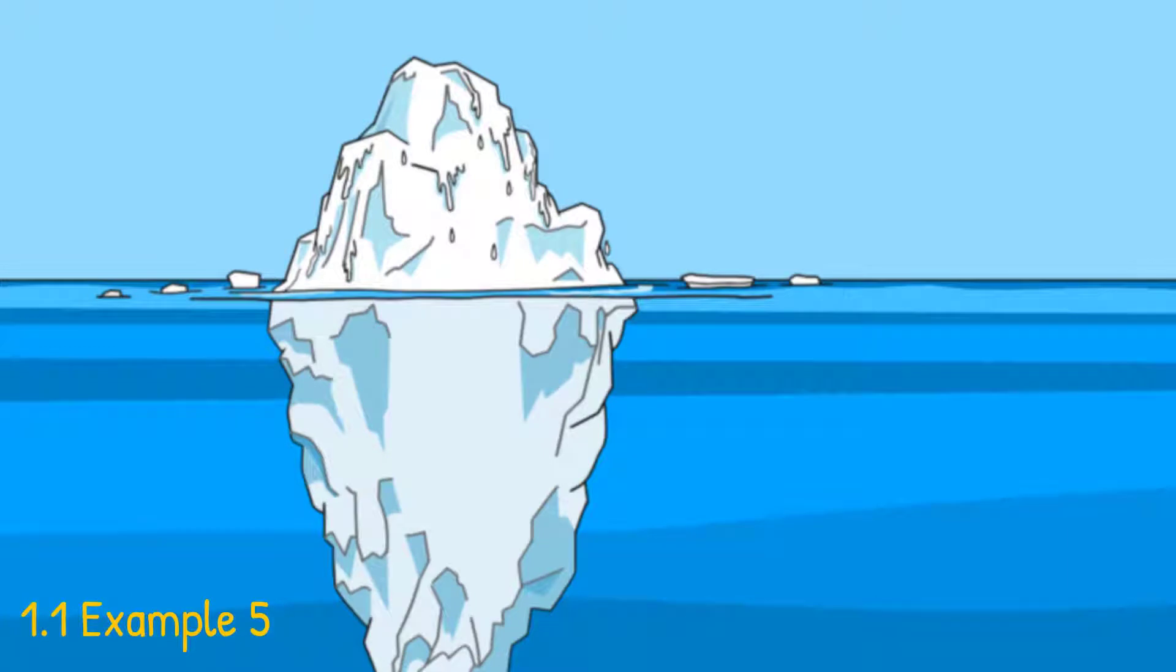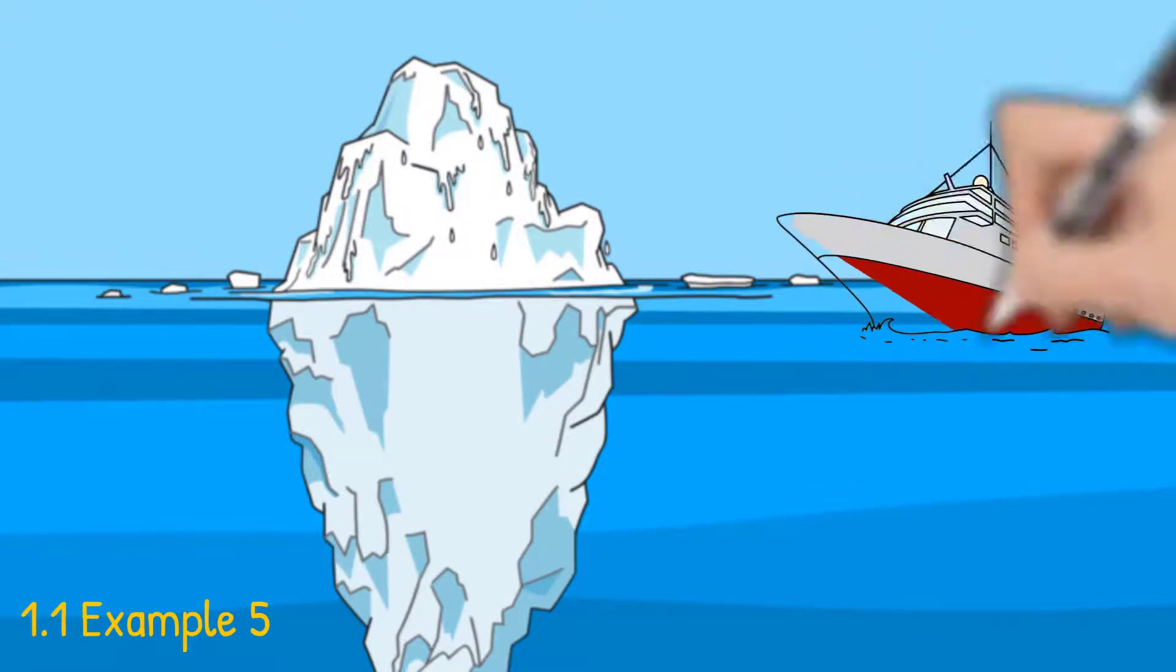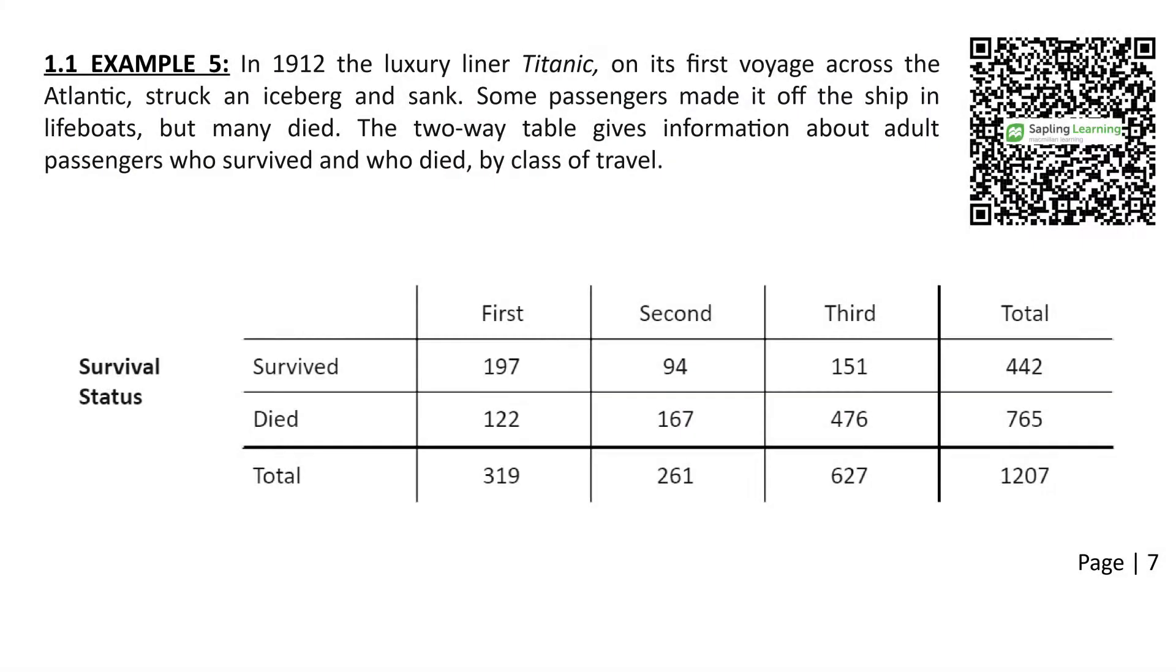Example 5. In 1912, the luxury liner Titanic on its first voyage across the Atlantic struck an iceberg and sank. Some passengers made it off the ship in lifeboats, but many died. The two-way table below gives information about adult passengers who survived and who died by class of travel. So our variables here are survival status, survived or died, and then their class of travel: first class, second class, or third class.